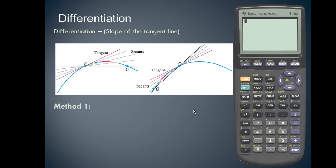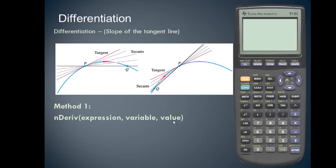On the TI-83 graphing calculator we're going to take a look at two methods of finding the slope of the tangent line at a point. The first method is the nDeriv function, which has the parameters of the expression, the variable of the expression, and the value. The second method is a graphical method, and we'll use the dy/dx function.